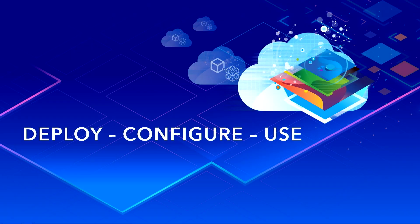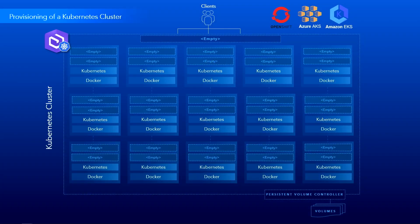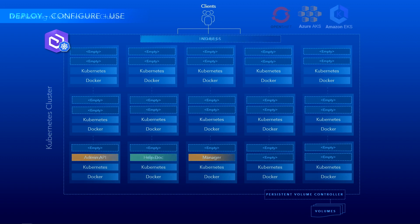Let's get into some detail in terms of how you deploy, configure, and use. Before you deploy, you need a provisioned Kubernetes cluster, which could be OpenShift, Azure AKS, or Amazon EKS. Here you see a cluster of about 15 nodes with some attached volumes for persistent storage.